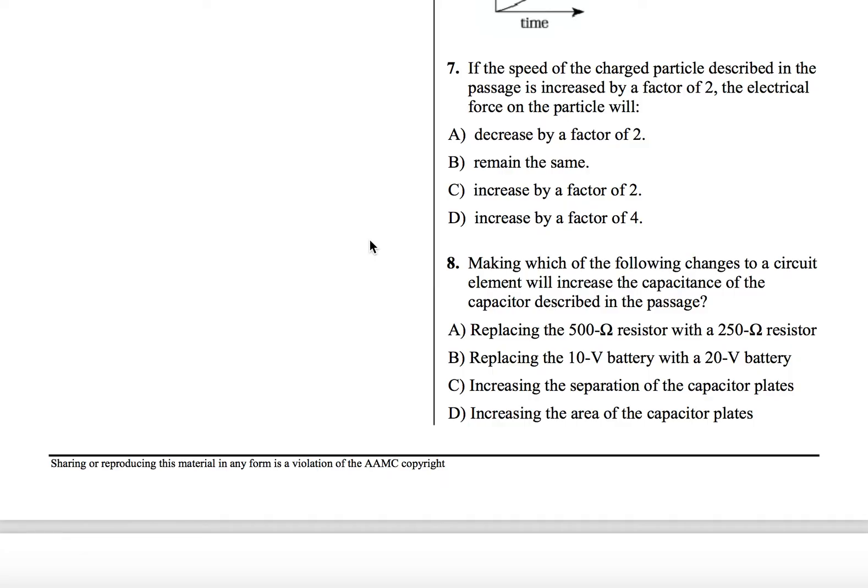So essentially, what that equation tells you is that if you increase the area, you're going to increase the capacitance. And if you decrease the distance between the plates, you're also going to increase the capacitance. So A says replacing the 500 ohm resistor, that has nothing to do with the capacitor itself. That's not going to change the capacitance. It might change the amount of charge you can store on it, but it won't change the amount of charge that could be stored. So B says replacing a 10-volt battery. Again, that has nothing to do with the capacitor.